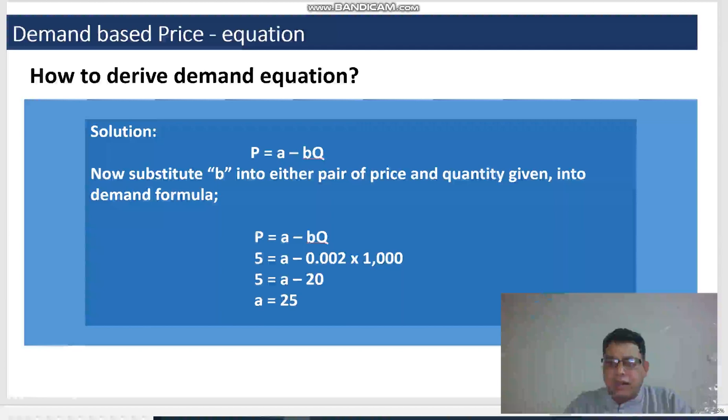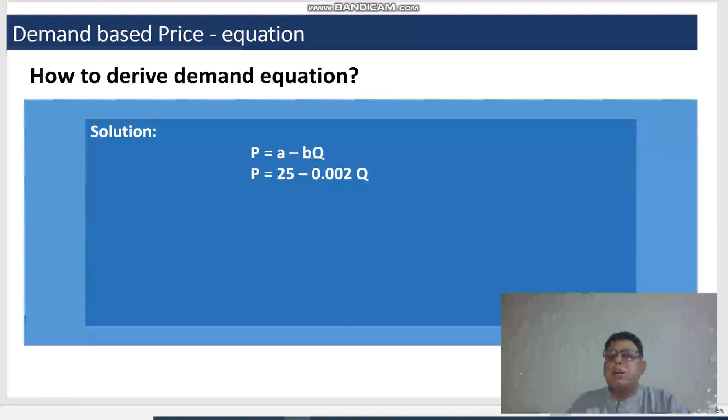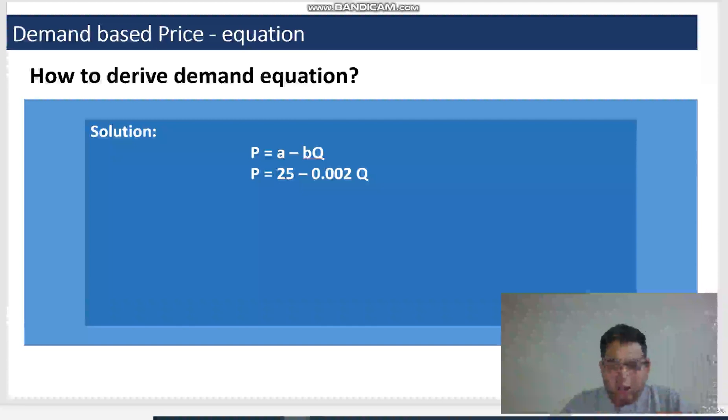So A equals to we end up with something like 25. So the B value has been determined, A value has been calculated, so the demand equation of this company is going to be P equals to 25 minus 0.002Q. And as soon as we get the quantity to be sold and we substitute into this demand equation, we are going to calculate the selling price. Or alternatively, if we have a price to charge, based upon that price we can actually determine the quantity to be sold as well.